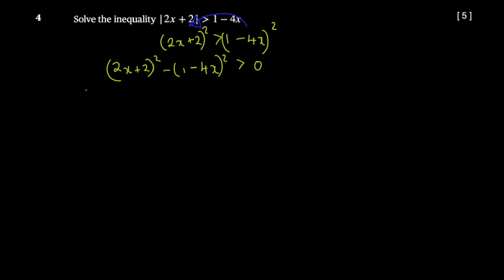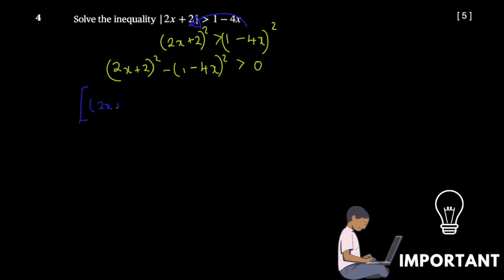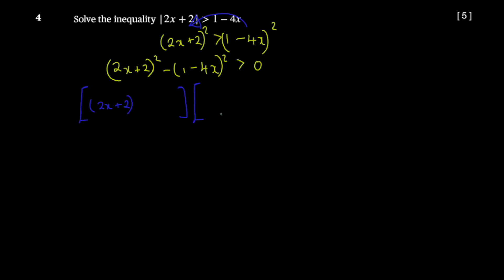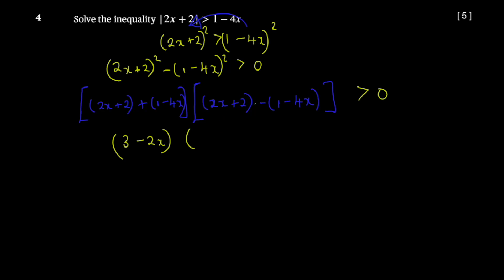Using difference of two squares, you write (2x + 2) as the square root factor on both parts. You get (2x + 2 + (1 - 4x)) times (2x + 2 - (1 - 4x)) greater than zero. Simplifying, the first factor becomes 3 - 2x and the second becomes 6x + 1, since 4x + 2x gives 6x and 2 minus 1 gives 1.